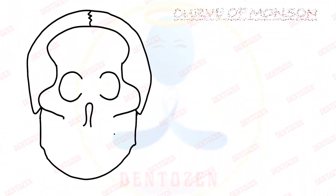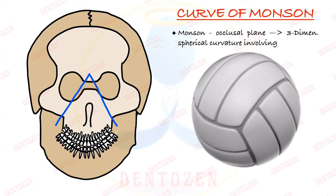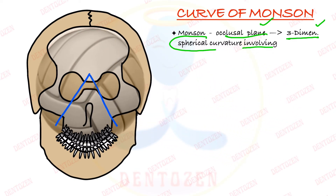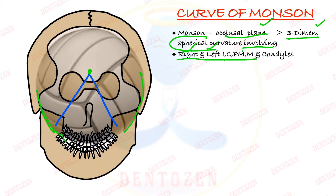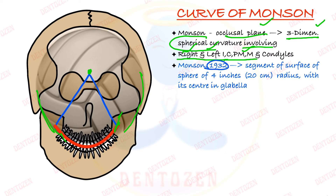Now the third curve — curve of Monson. Monson said that the occlusal plane, seen in three-dimensional view, is a spherical structure. This sphere has a center at the glabella — the point between the eyes on the forehead. The surface of this sphere — specifically a segment of that surface — passes through the plane of occlusion of all the teeth and the condyles. That segment is known as the curve of Monson, passing through both right and left sides, all the teeth, and the condyles. Monson described this curve in 1932 as a segment of the surface of a sphere, 4 inches in radius with its center at glabella.